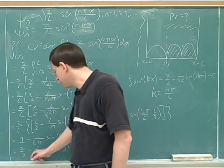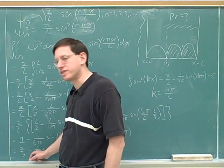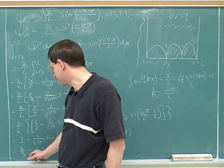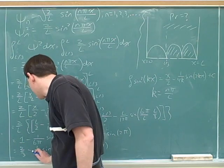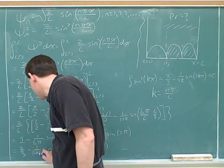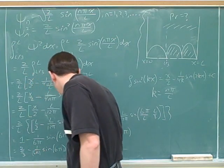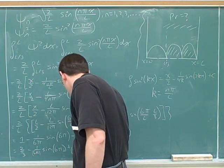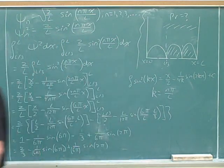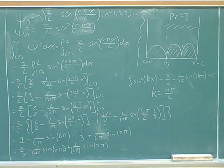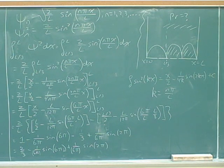Here we've got two things on the bottom of this fraction, both the 6 and the pi. So you have to put these in parentheses, or the calculator won't know that they're a single denominator. Any time you have more than one thing on the top or on the bottom of a fraction, you have to put that top or bottom in parentheses.